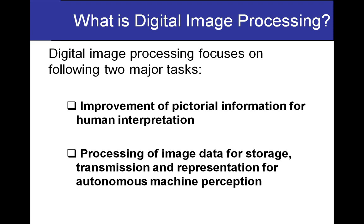Digital image processing focuses on two major tasks. The first is the improvement of pictorial information for human interpretation. Within a few weeks you will be implementing applications in which you transform an image into a better image — in other words, you are going to enhance an image. That is the primary purpose of digital image processing: to enhance pictorial information so that it is more useful for human interpretation.